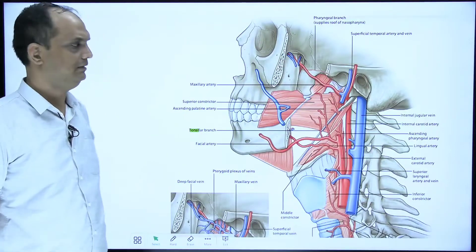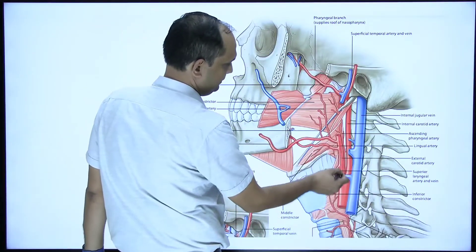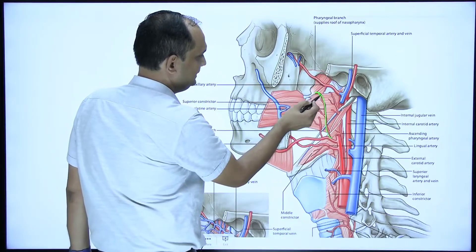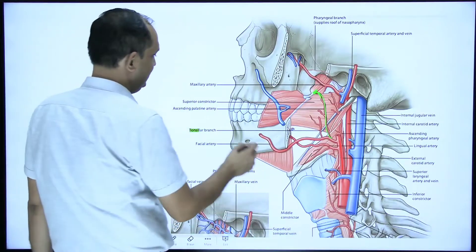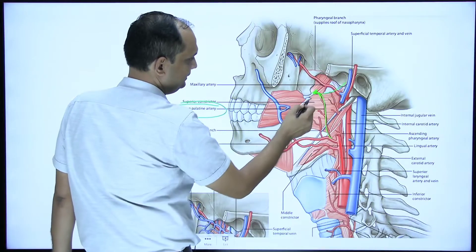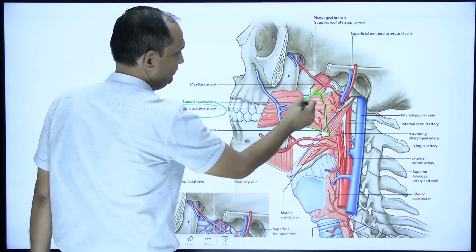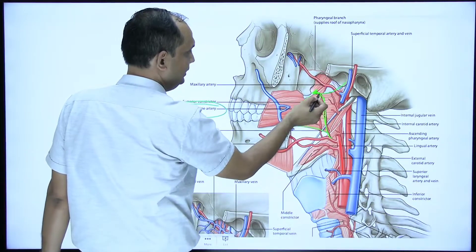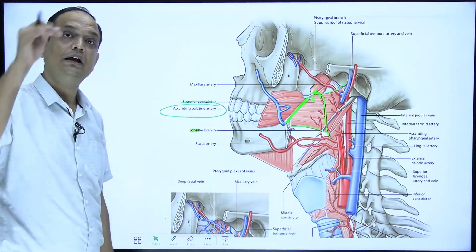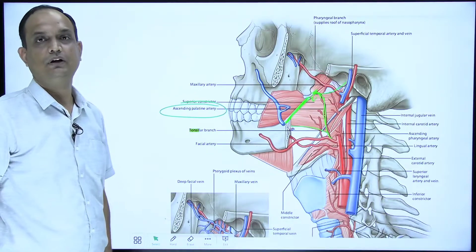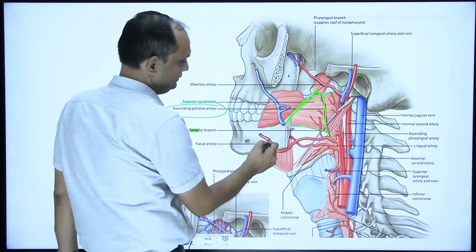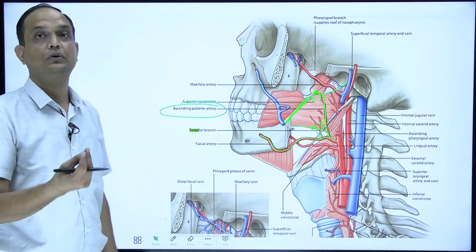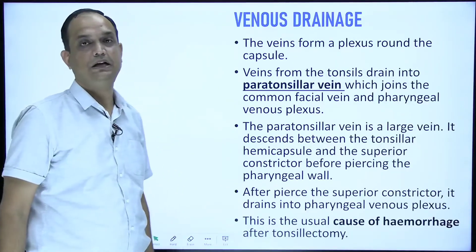In the diagram, the external carotid artery gives branches supplying the tonsil. The ascending palatine artery runs outside the superior constrictor muscle (arising from the pterygomandibular raphe), enters along the upper border into the pharynx, and supplies the palatine tonsil. The facial artery gives branches that supply the tonsil from its lower part. The major blood supply comes from the facial artery, specifically the tonsillar branch.